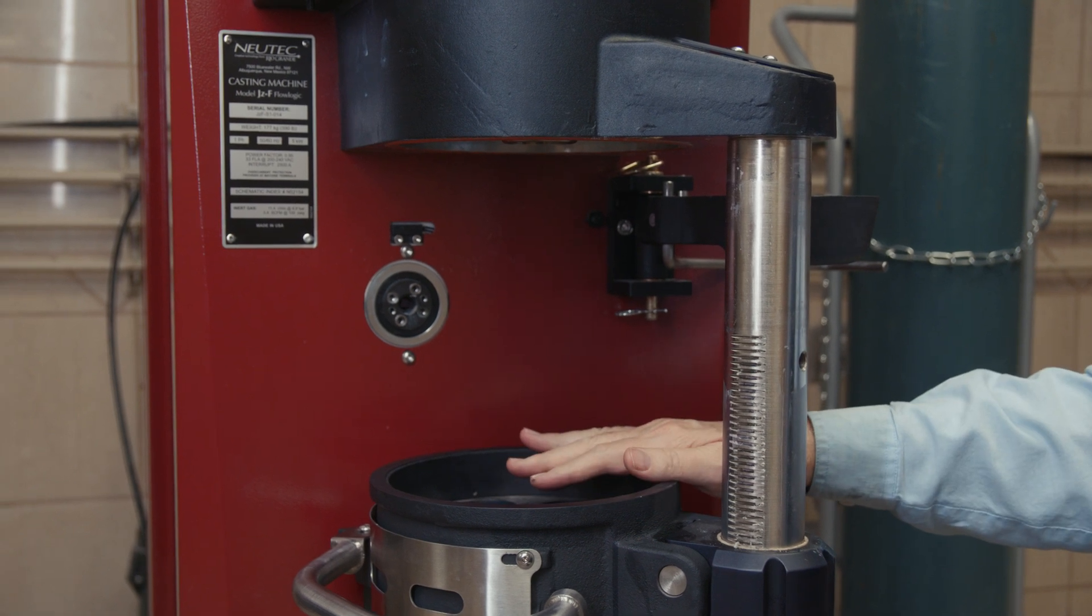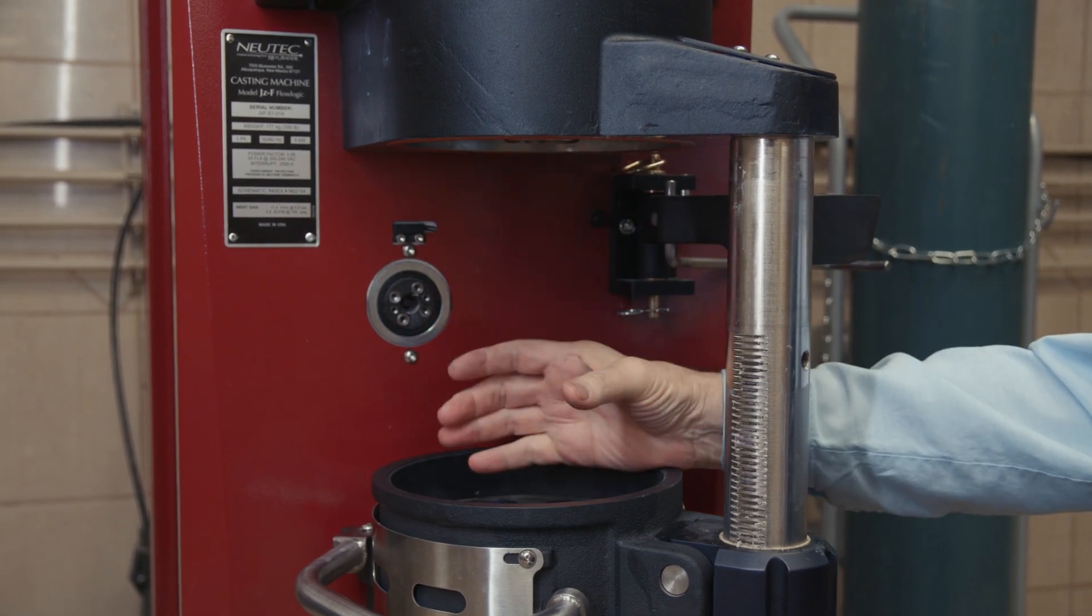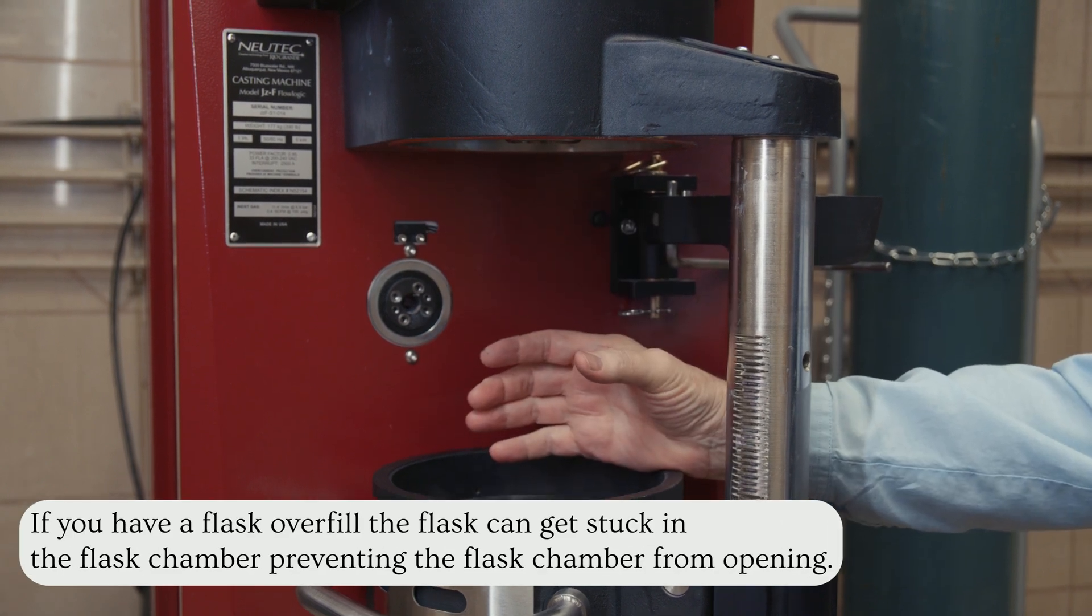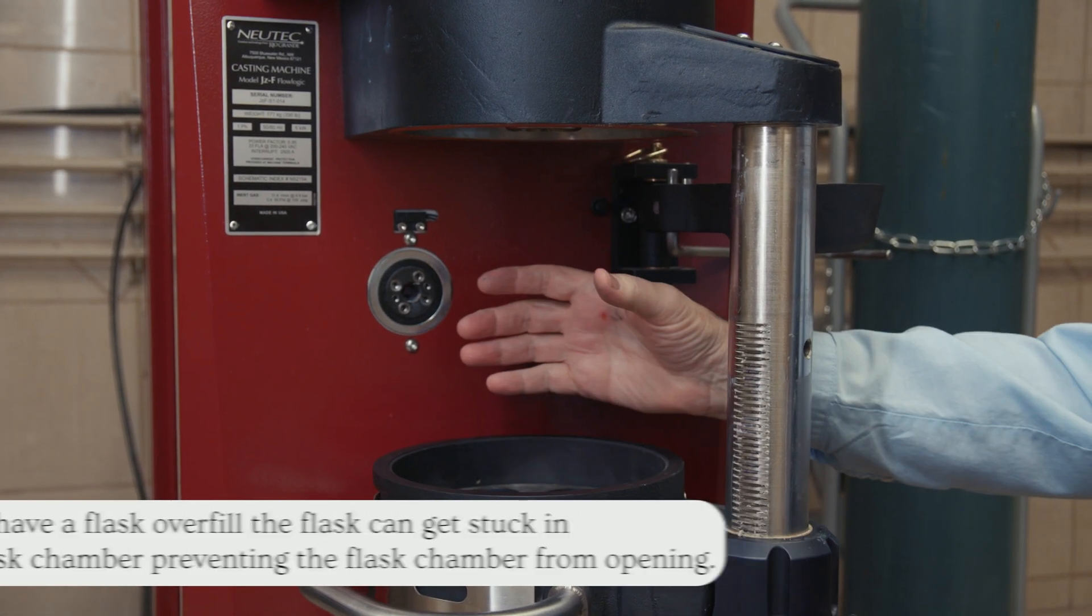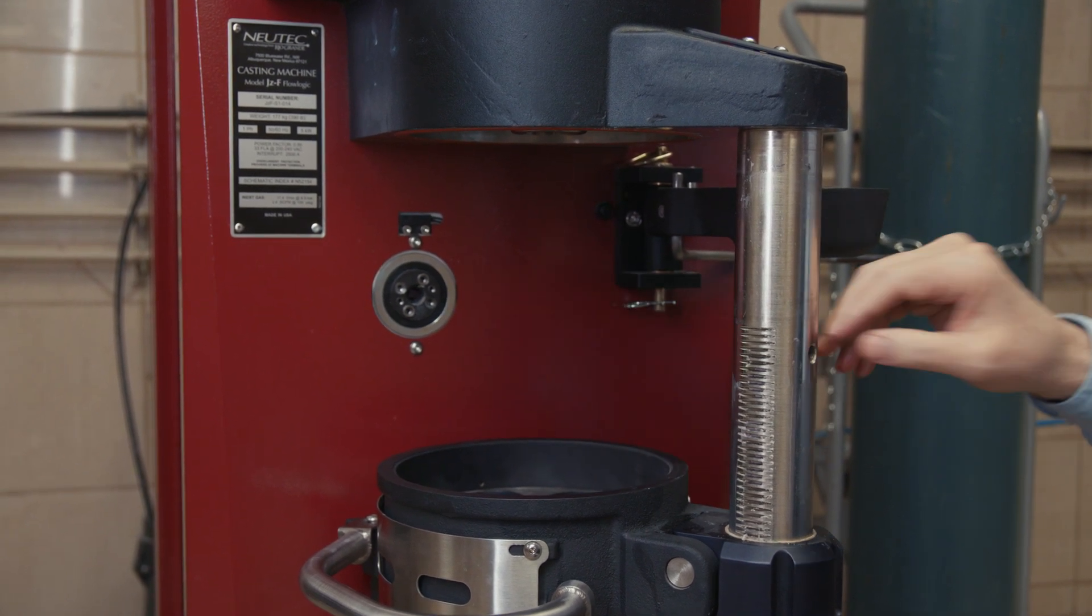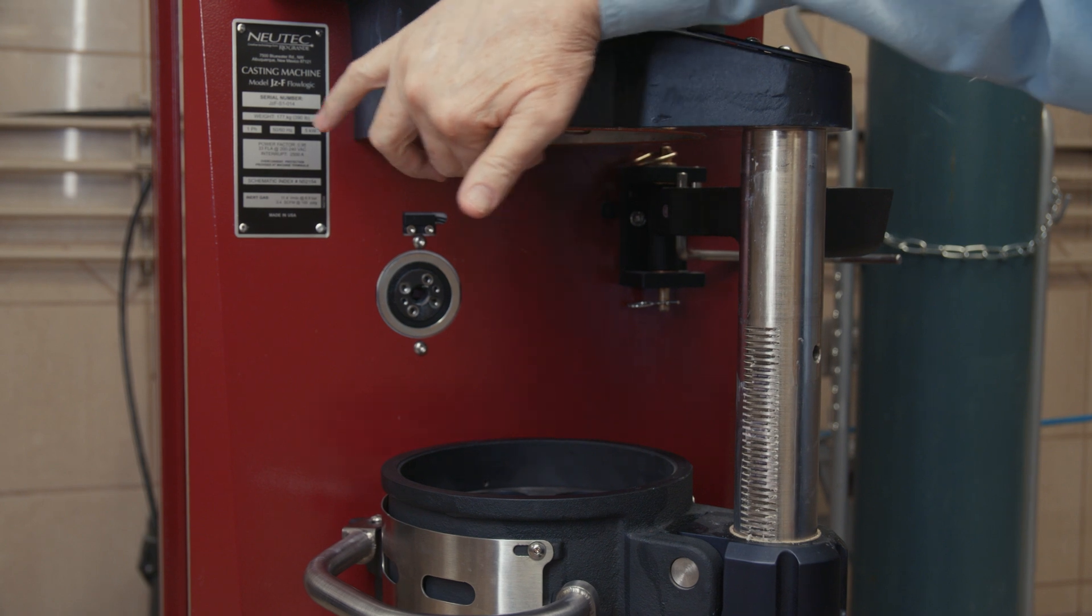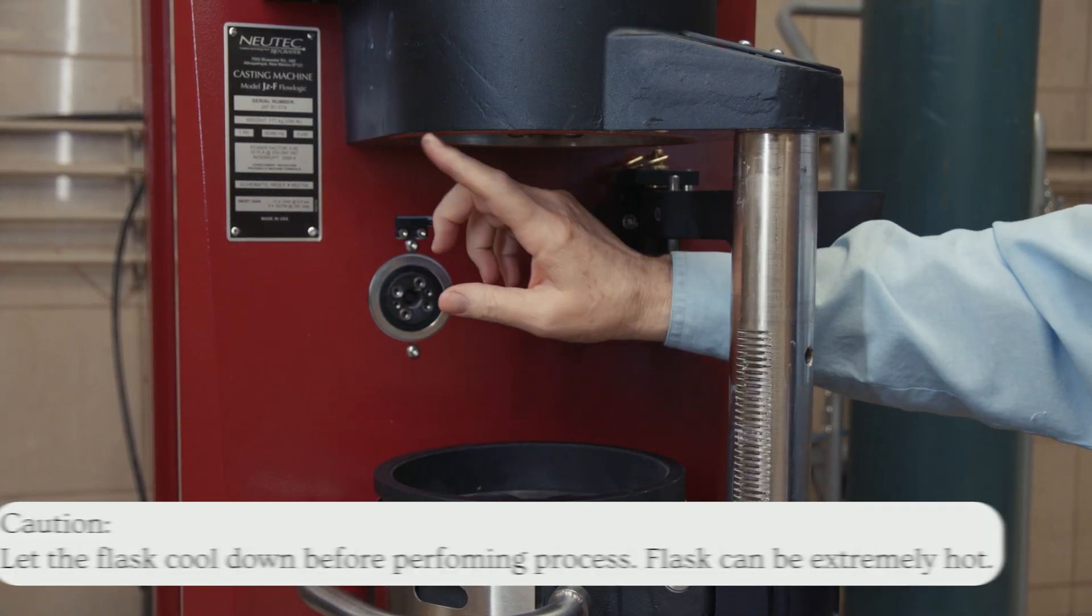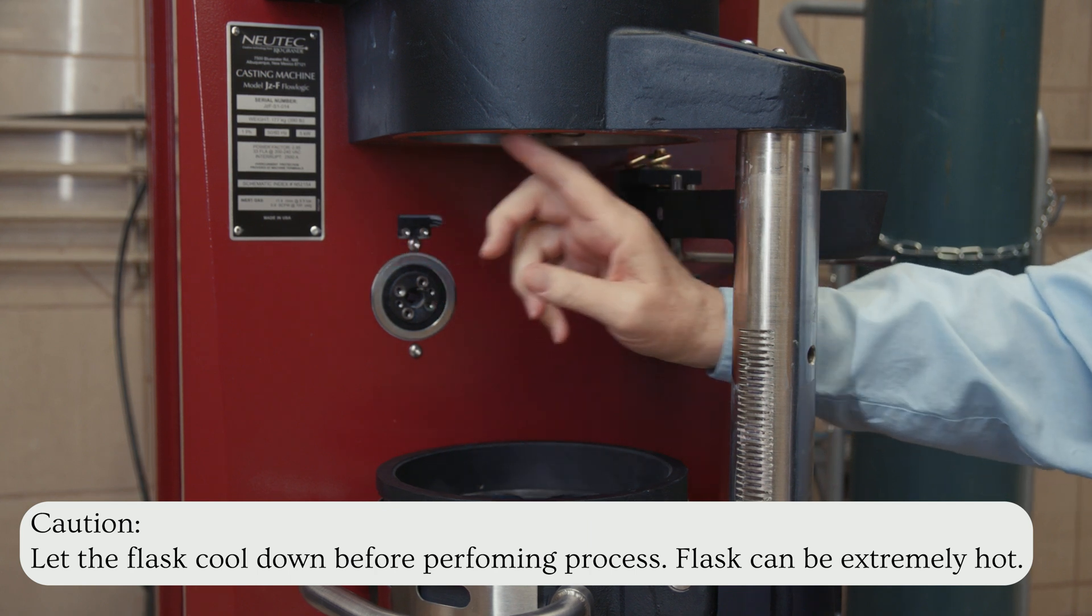Once you lower the flask chamber, you will probably see your flask dangling here or stuck here. You may be able to get in there and pry it or bend it to loosen it. If not, you may have to take a hacksaw blade or something and go between here. Cut the metal only - do not hit any of the bottom part of the crucible chamber.